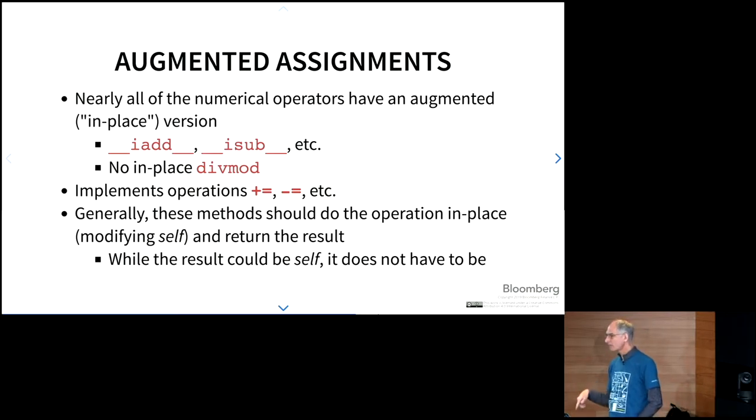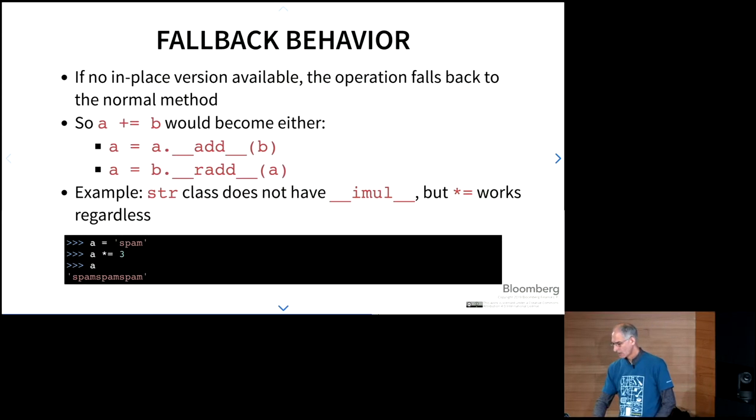And one of the places where you would see this in one of the basic types is integers, the integer instances of integers are immutable. So if I do a plus equal operation, it's going to do the operation and return a new object. So if I do 42 plus equals 1, I'm going to get not self of 42, I'm going to get a new object, 43. There's also fallback behavior. If there's no in-place version available, the operator falls back to the normal method. So if your class does not support plus equals, essentially, it would break down into one of these two, where it would do the assignment and do the add or r add, depending on what the types are here. So an example of that is the str class does not implement an IMul method. But it does support the star equals because of this fallback behavior here.